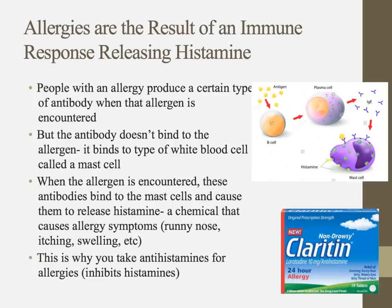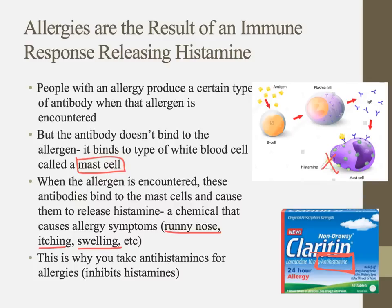In an allergic response, antibodies bind to cells called mast cells instead of binding directly to the antigens. When the allergen — pollen, peanuts, etc. — binds to these antibodies on the mast cells, it causes the mast cells to release histamine. Histamine is responsible for allergy symptoms: runny nose, itching, swelling, hives, throat swelling. That's why allergy medicine says antihistamine — it counteracts the histamine but doesn't necessarily prevent the allergic response itself.